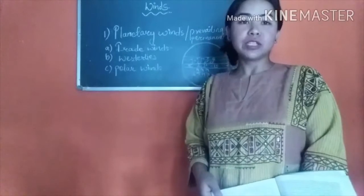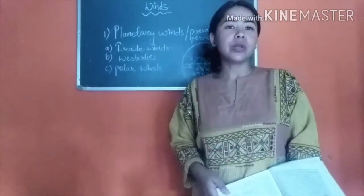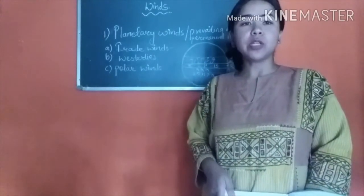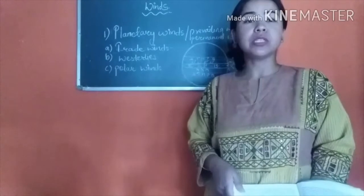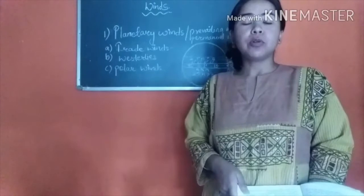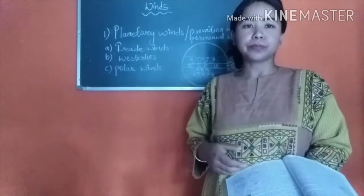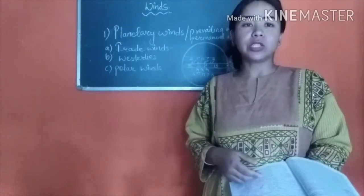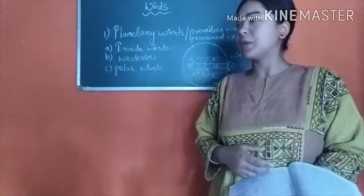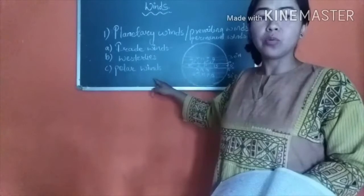Now we move on to planetary winds. Planetary winds are also known as prevailing winds or permanent winds — these three terms refer to the same type of winds. Planetary winds are winds which blow from one direction throughout the year; they do not change their direction. There are three subtypes: trade winds, westerlies, and polar winds.